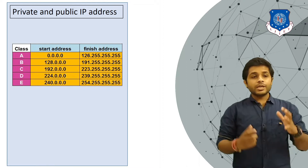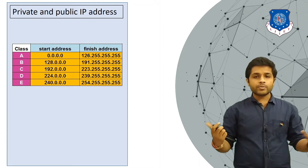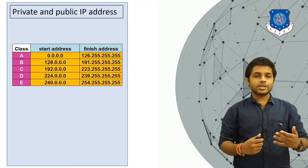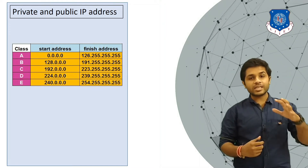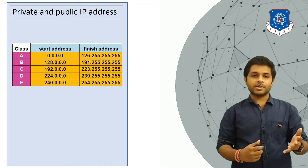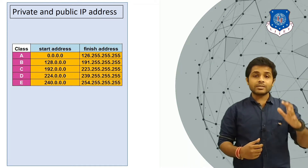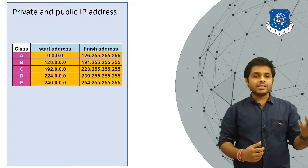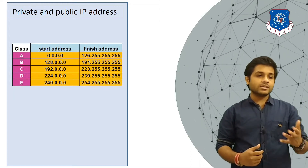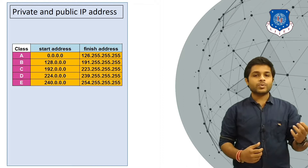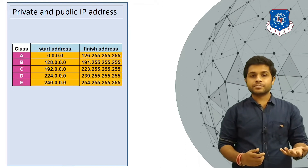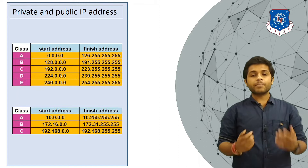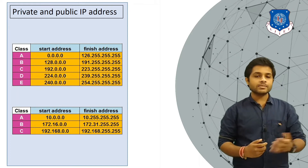That is why if you want to create a large local area network, you can still communicate between devices within that network using private IP addresses. But if you want to connect devices in your local area network to the internet, each and every device would need a unique public IP address.